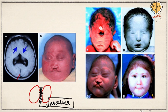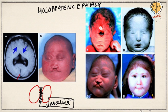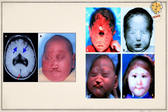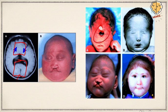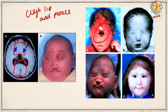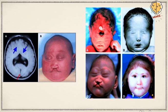As shown in the diagrams, in holoprosencephaly the midline has not formed and the hemispheres are fused. A more severe version is cyclopia, where the eyes are fused. Cleft palate and cleft lip can also be seen in some anomalies. For USMLE Step 1, you need to remember the pathology associated with sonic hedgehog gene.